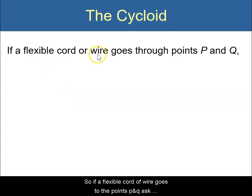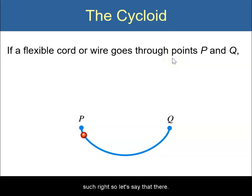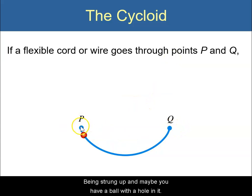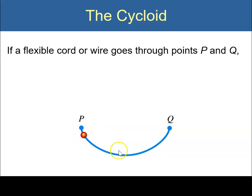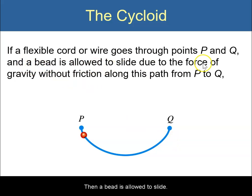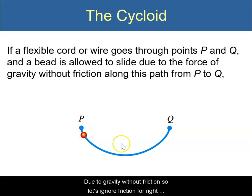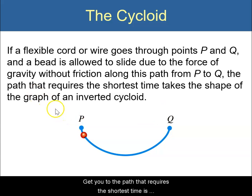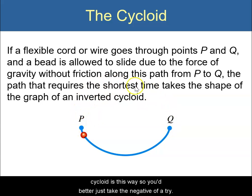One application of the cycloid: if a flexible cord connects points P and Q, and a bead slides due to gravity without friction, the path that requires the shortest time to slide from P to Q is an inverted cycloid — since a standard cycloid opens upward, we take the negative to get the inverted form.